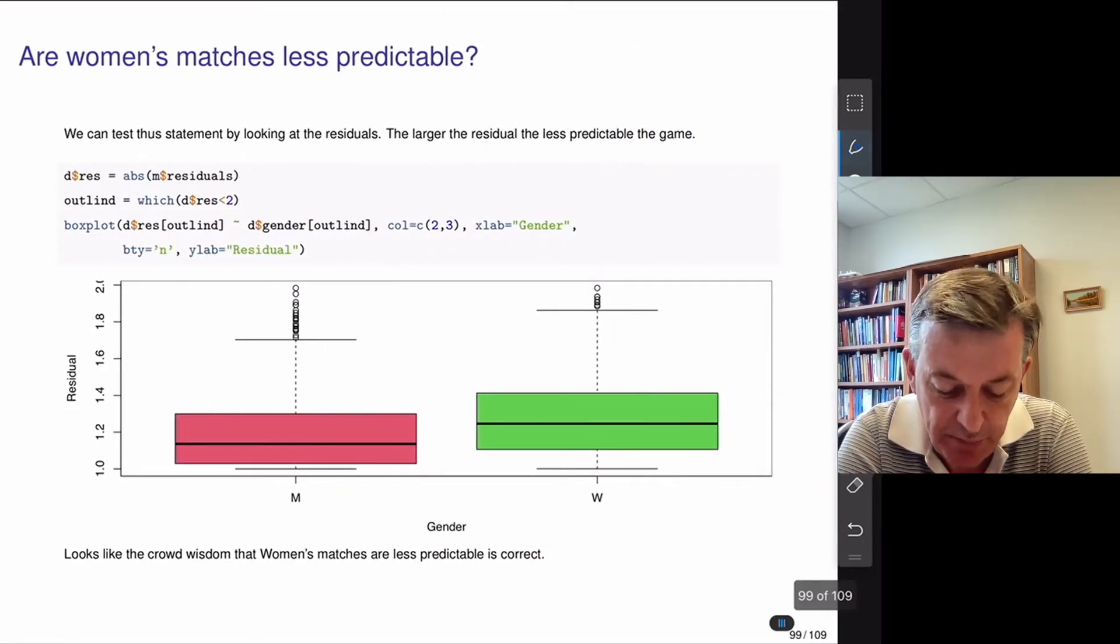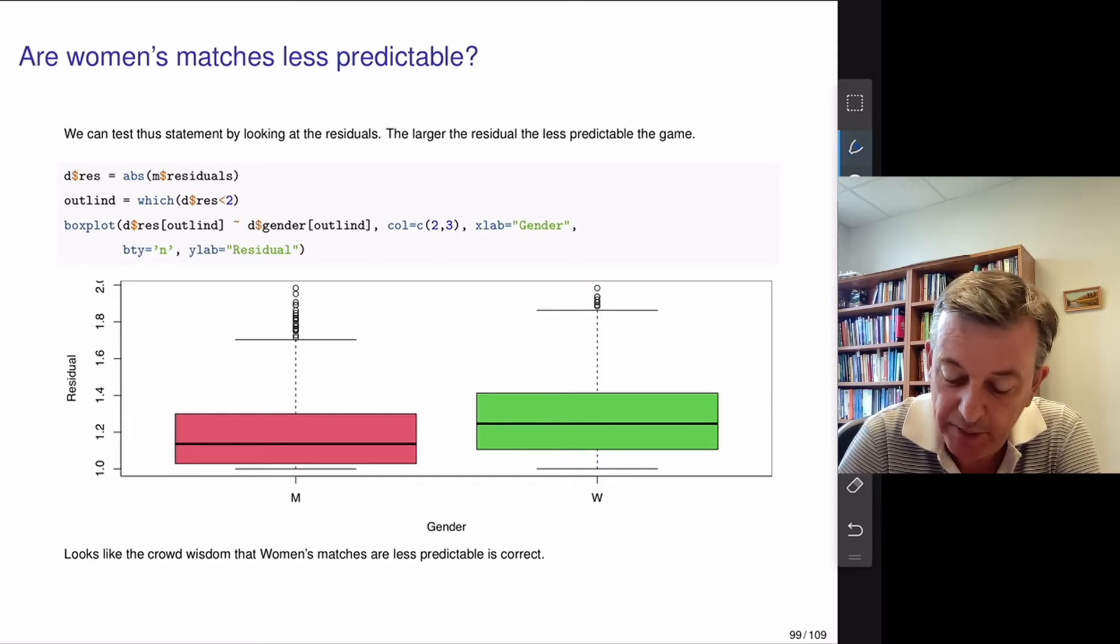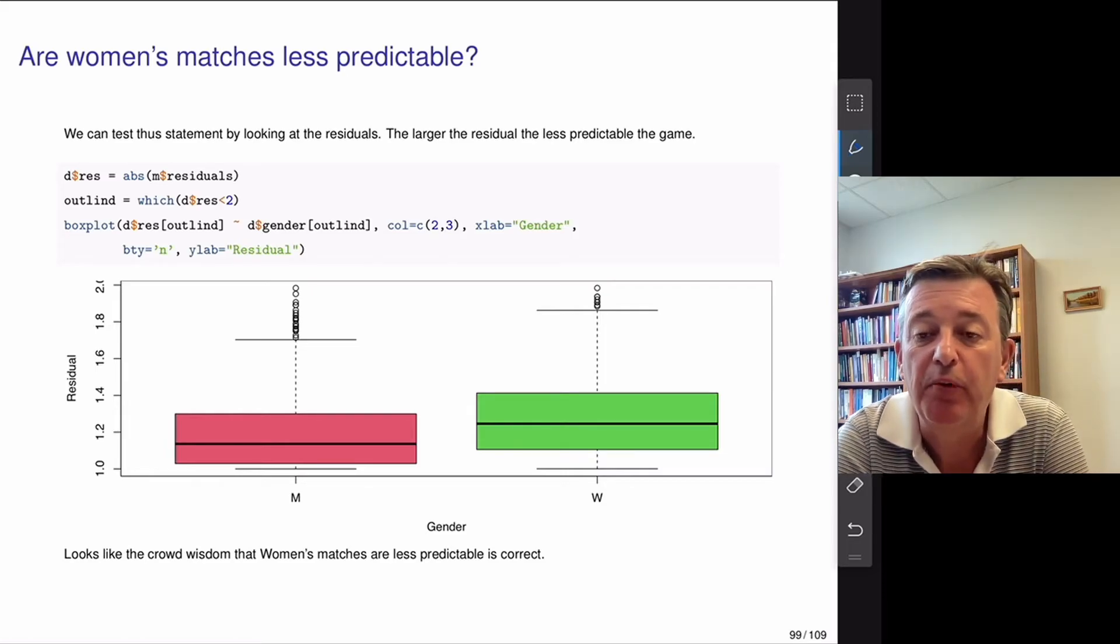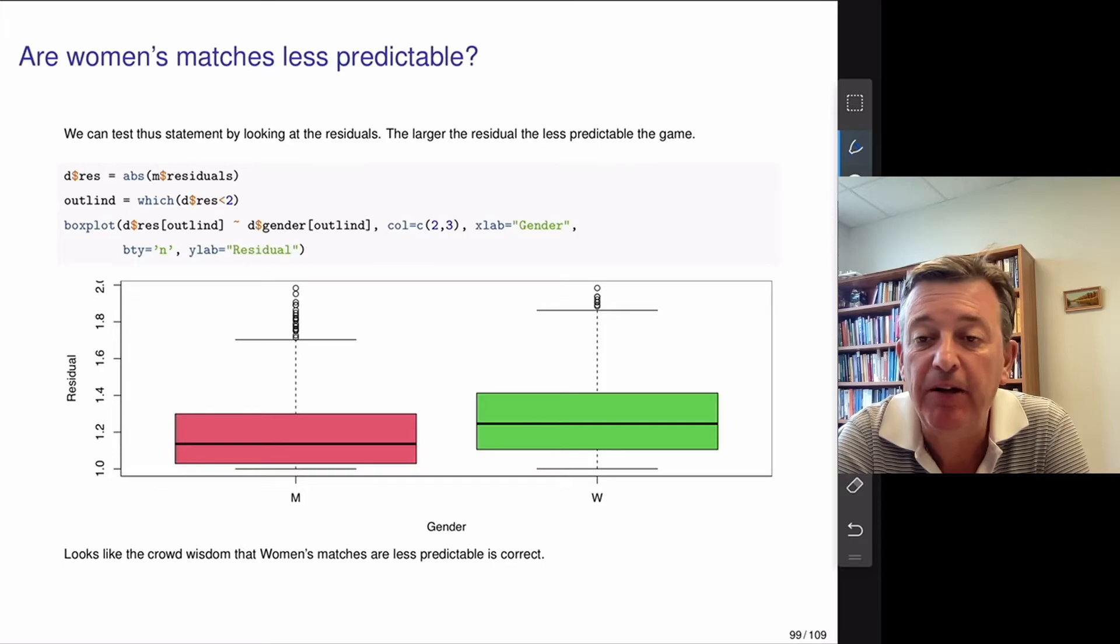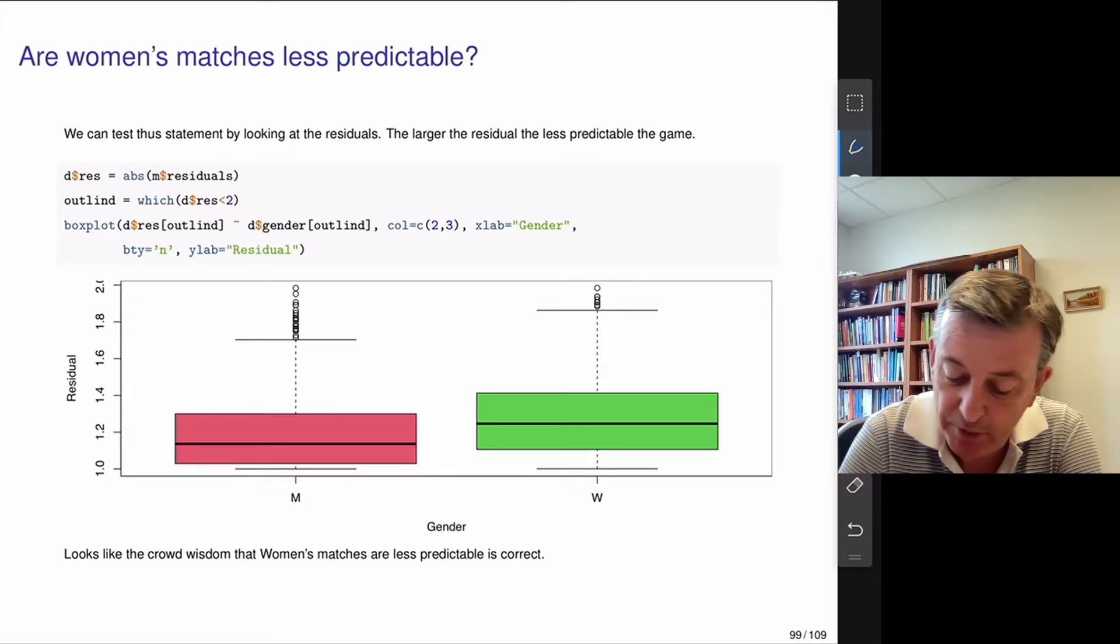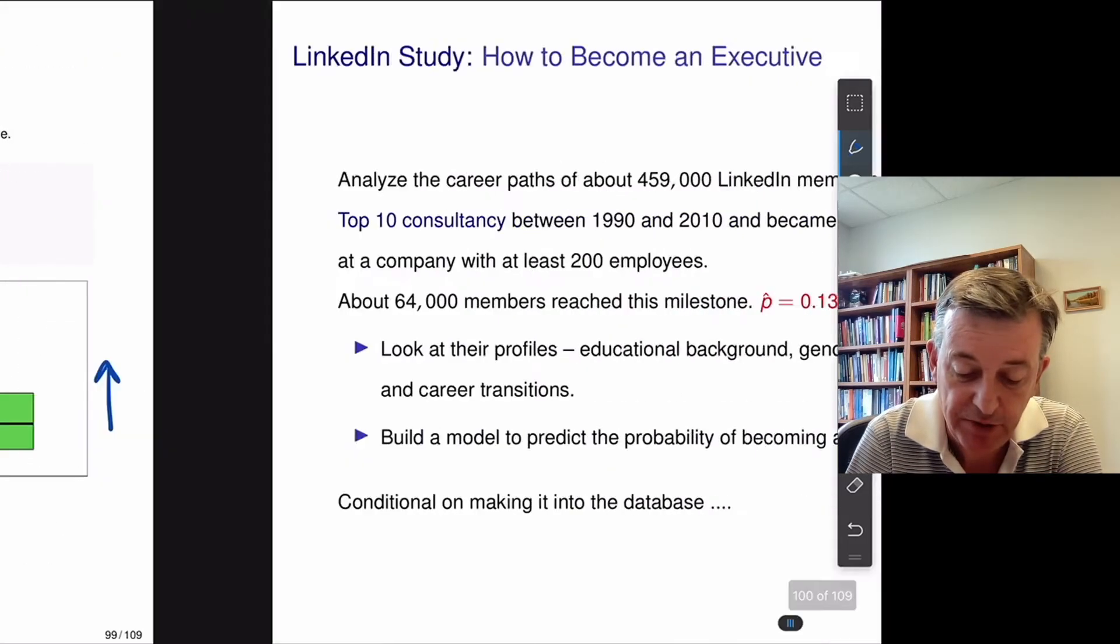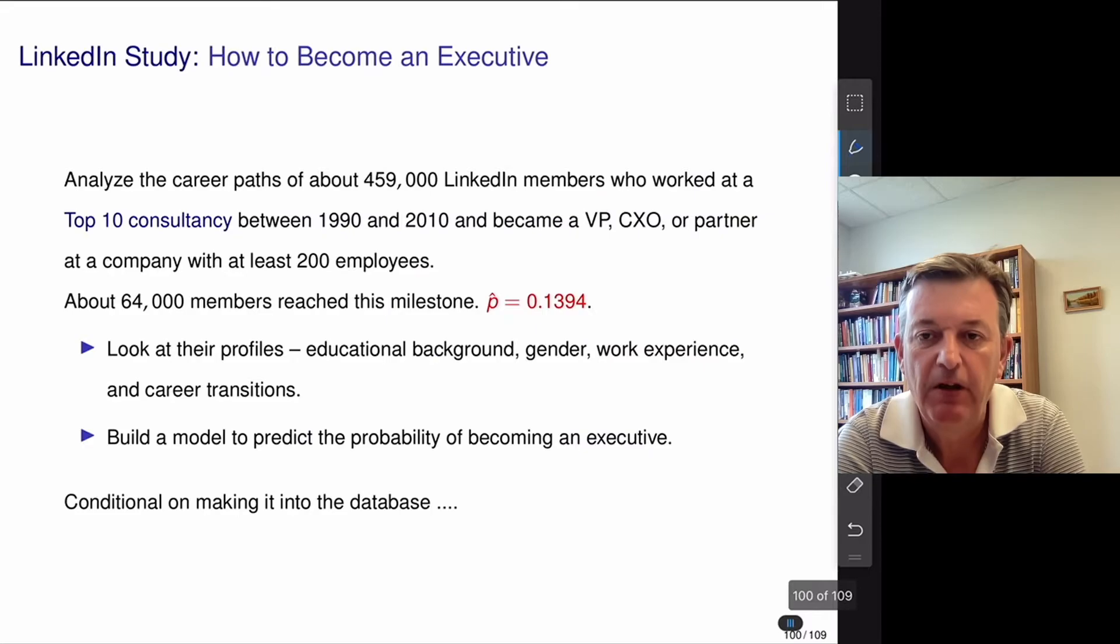Are women's matches less predictable? And it turns out that's the case. And again, from our model, by predictability, the model with the lower standard deviation about the regression line, or about the regression is more predictable. And you can see that the box plot for women is slightly higher than that for men. So, that's another interesting finding that women's matches are less predictable.